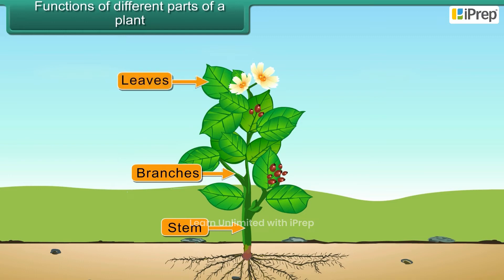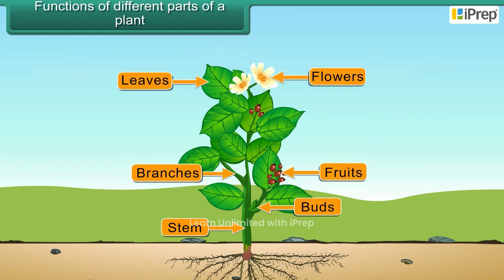leaves, buds, flowers, and fruits. The stem also carries water and nutrients from the roots to the leaves.